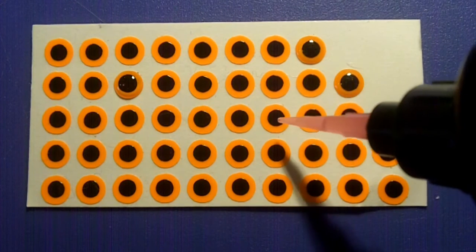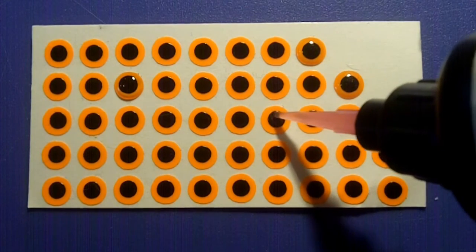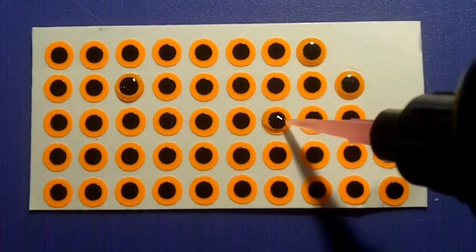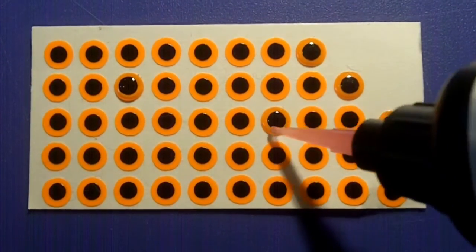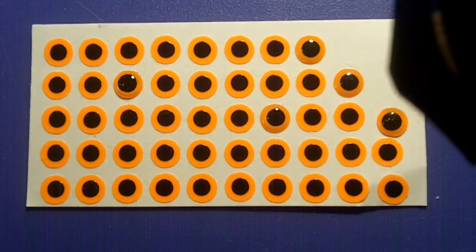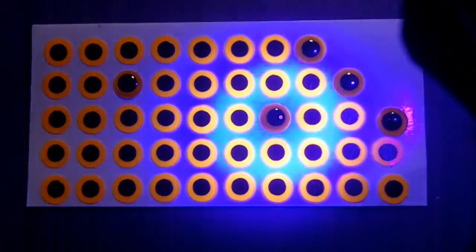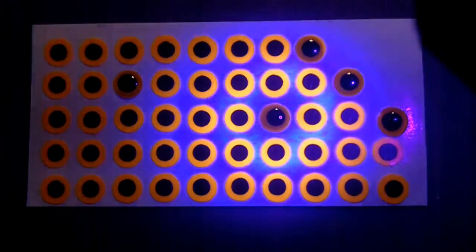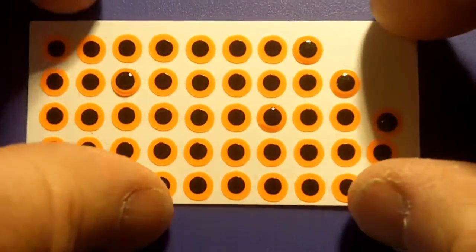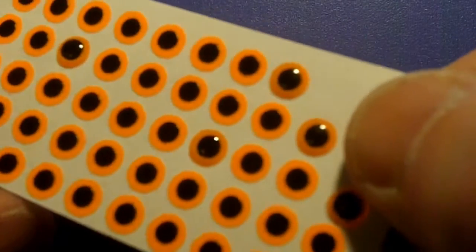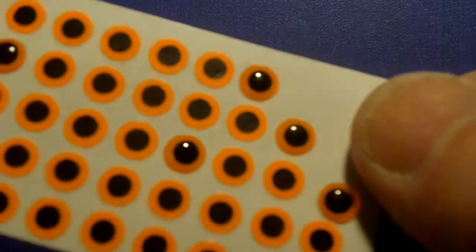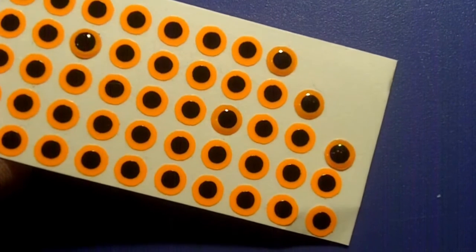If we take the applicator and squeeze a small amount of Bug Bond into the centre, and allow it to dome in the eye ensuring that we don't go over the edge, and then we take our UV light source, after a few seconds we have a perfect, tack-free 3D eye. Now what's next?